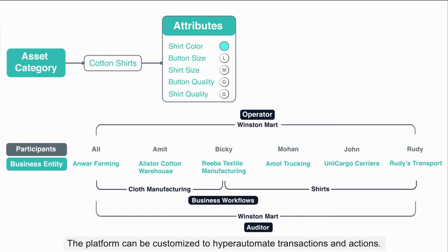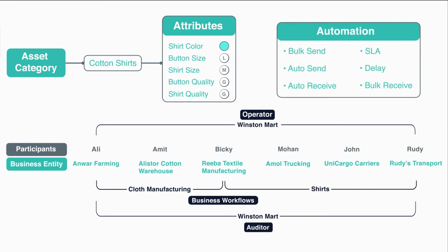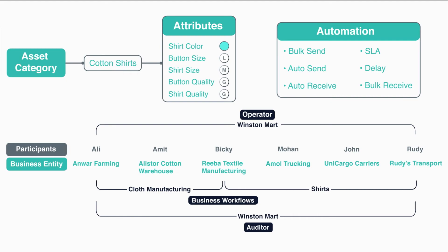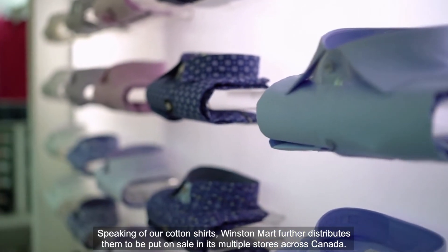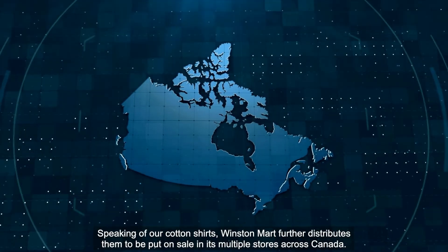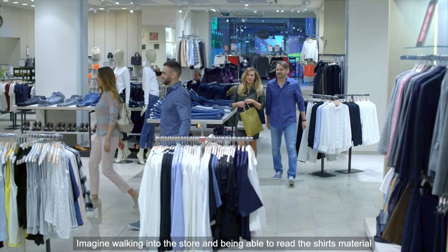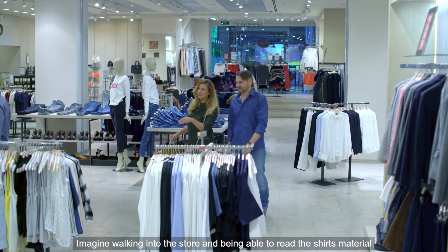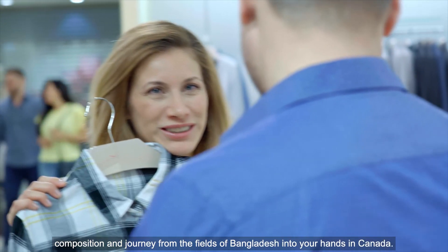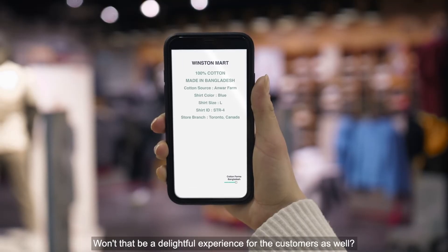The platform can be customized to hyper-automate transactions and actions — it can analyze and execute the required actions whenever a certain condition is fulfilled. Speaking of our cotton shirts, Winston Mart further distributes them to be put on sale in its multiple stores across Canada. Imagine walking into the store and being able to read the shirt's material composition and journey from the fields of Bangladesh into your hands in Canada.